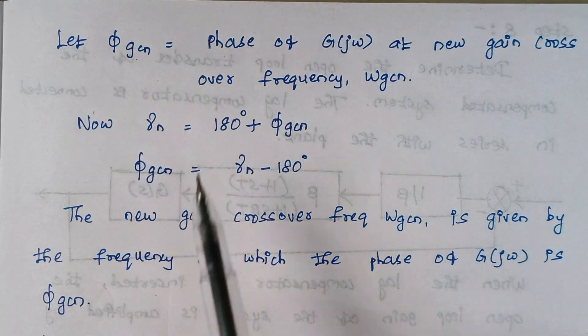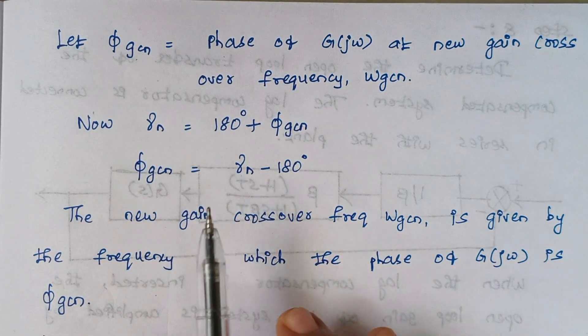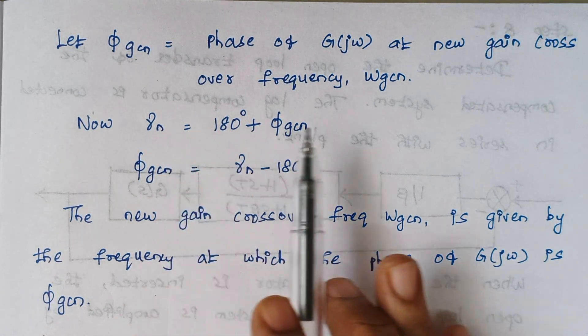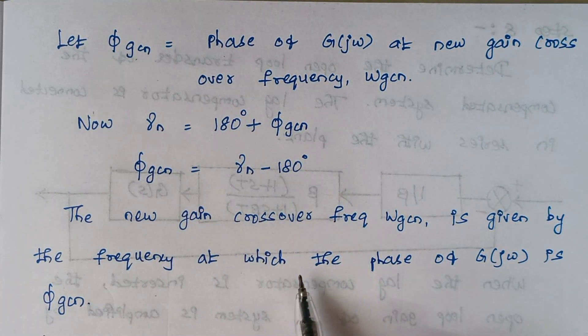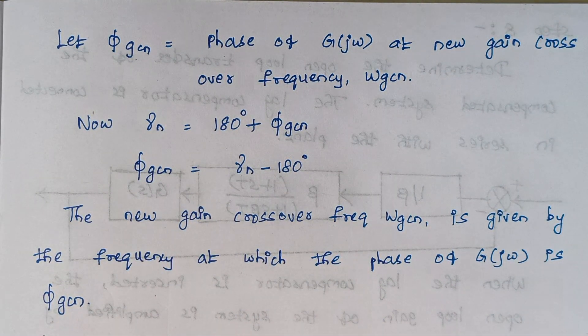To summarize step 5: we know gamma_N, and using the formula pi_GCN = gamma_N − 180 degrees, we find pi_GCN. While the procedure may read complex, solving problems with these formulas will be much easier in practice.